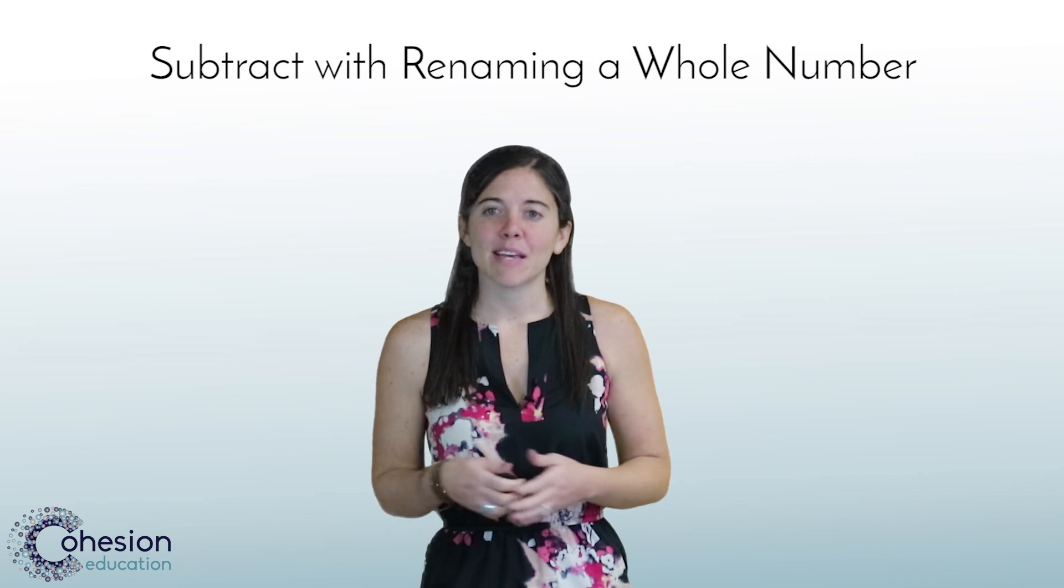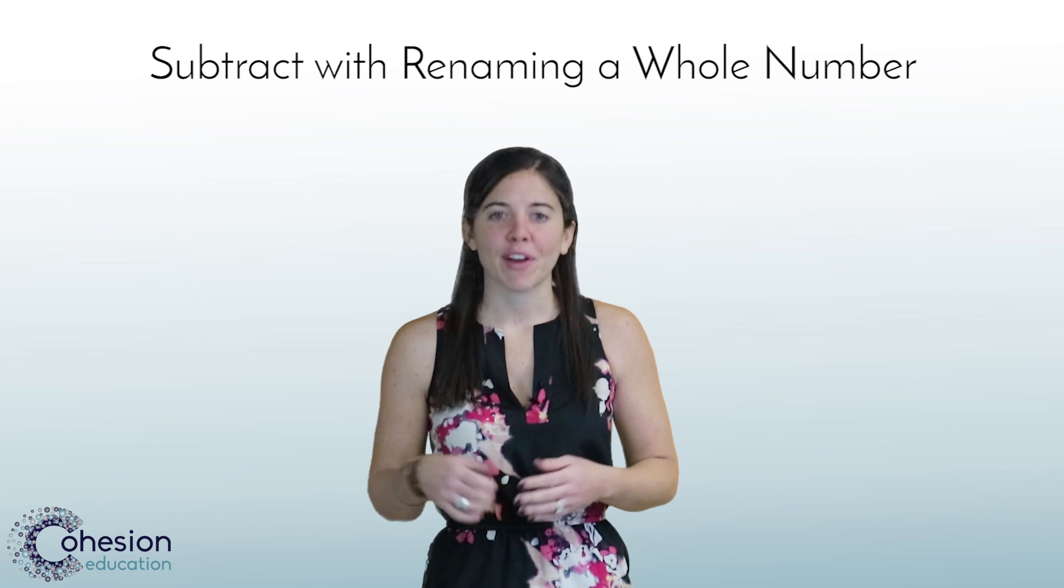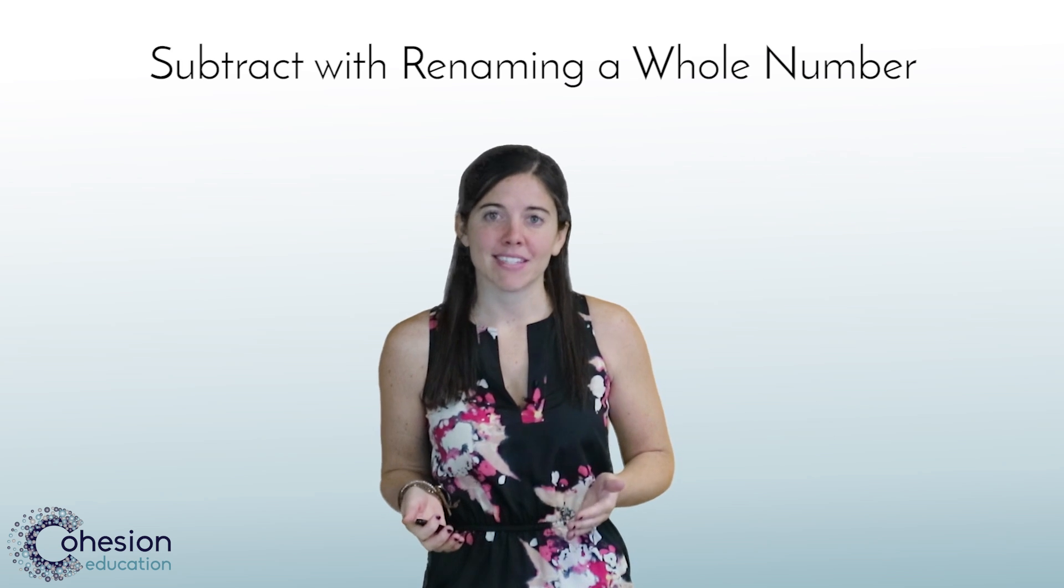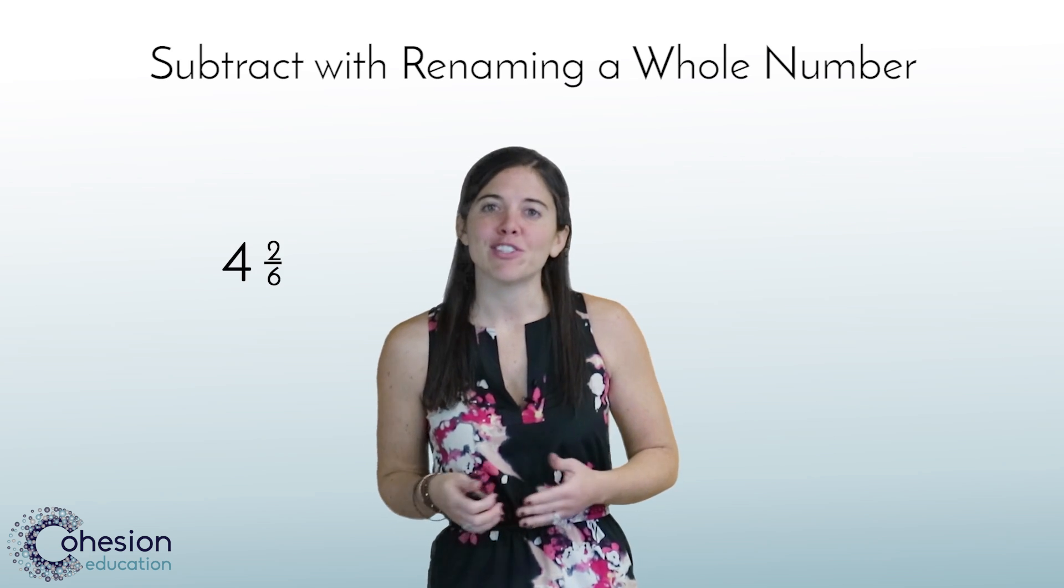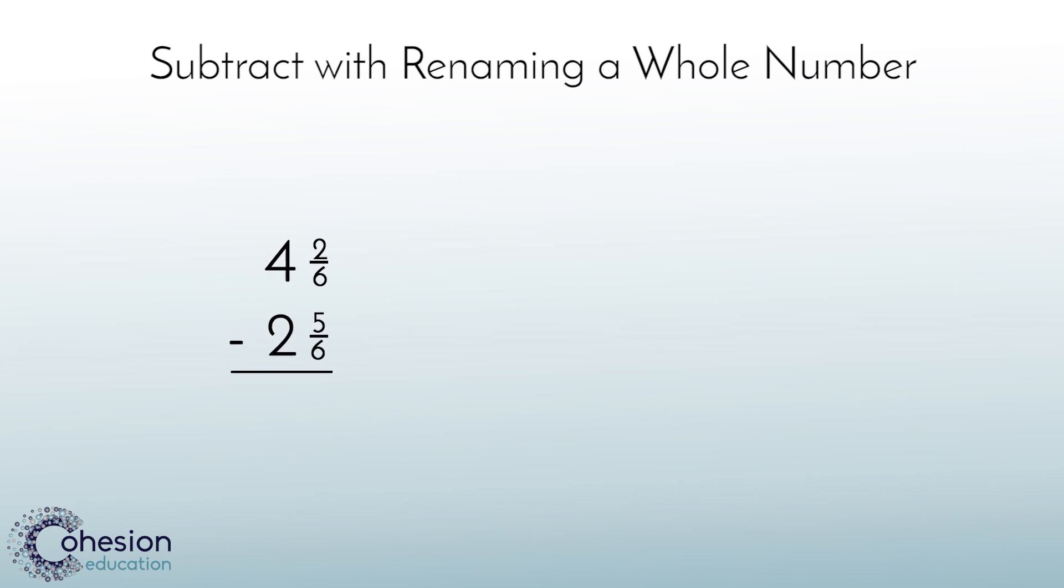Let's take a look at another example. Only this time we'll make the fraction in the smaller mixed number greater than the fraction in the greater mixed number. 4 and 2 sixths minus 2 and 5 sixths. Let's line the mixed numbers up vertically first, with the greater mixed number on top.